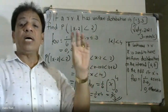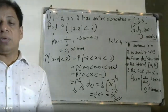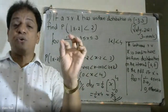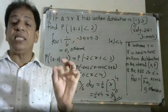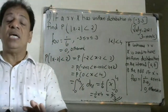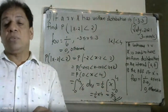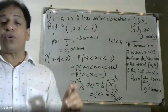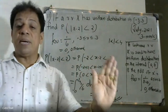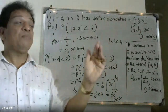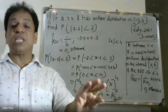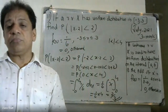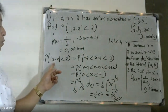To recap: a continuous random variable X is said to have uniform distribution on interval (a, b) if the probability density function f(x) = 1/(b minus a) for a less than or equal to x less than or equal to b, and 0 for all other cases. For our problem, with a = minus 3 and b = plus 3, f(x) = 1/6.